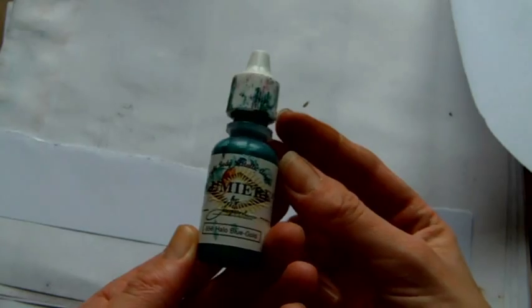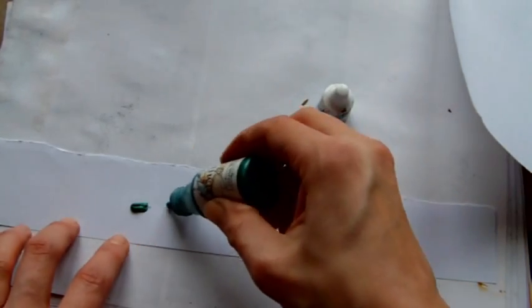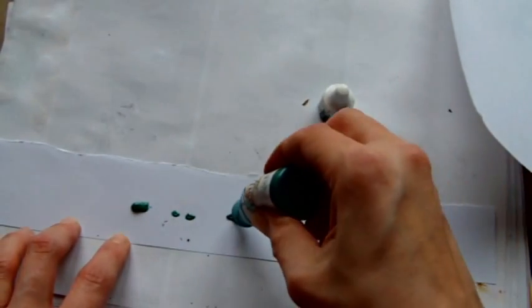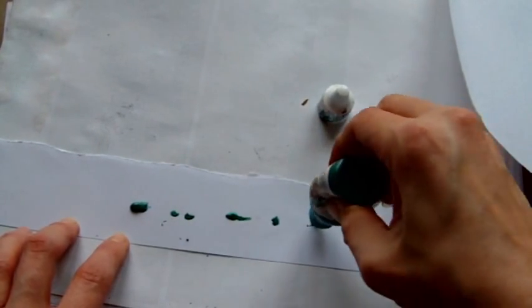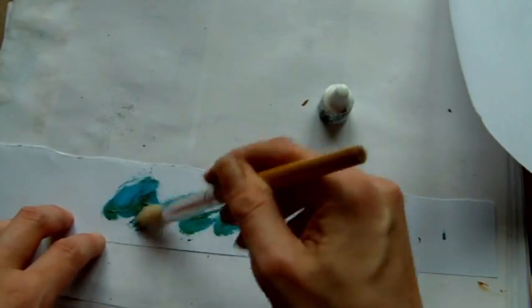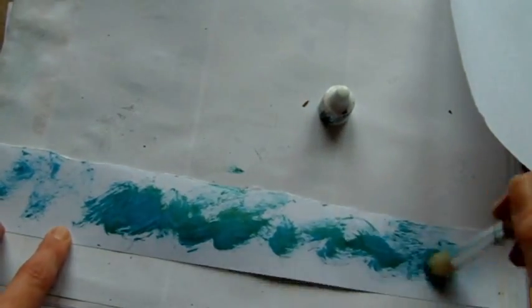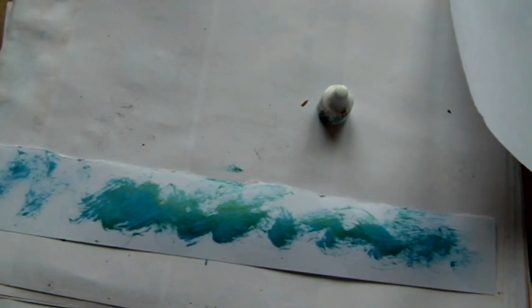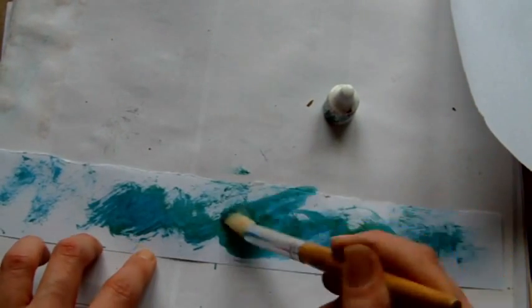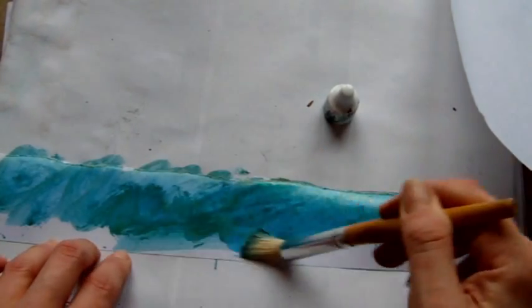So then I'm going to take some lumiere paint and this is in the halo blue gold and I'm just going to add, there's not a lot of this left, I've got some more. And I'm just going to take a stipple type brush just to start brushing that in. I'm going to add a very small amount of water because lumieres are a water based color so you can water them down a little bit.